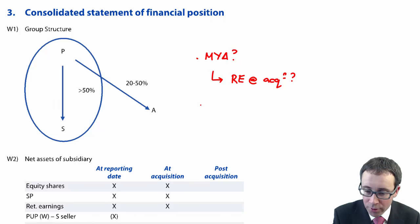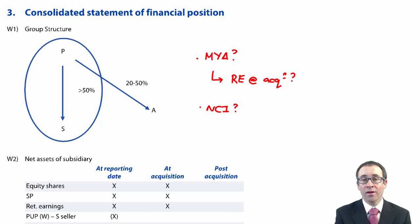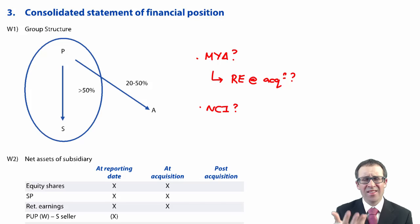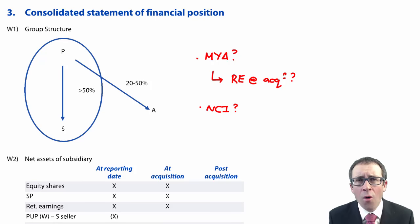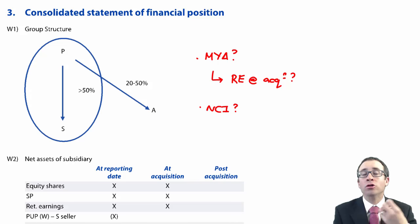The other thing you can do is work out what the non-controlling interest is. If you have 75% of a subsidiary, then you have a 25% NCI. Remember, for an associate there is no non-controlling interest — we don't have control of an associate, we only have influence. You can only have non-controlling interest if you have control.